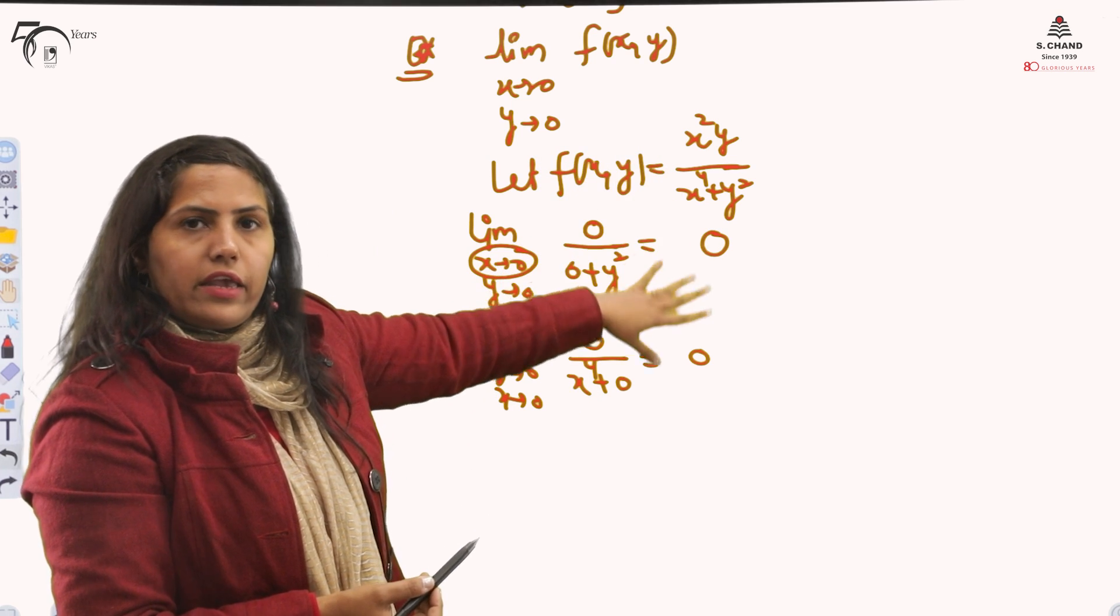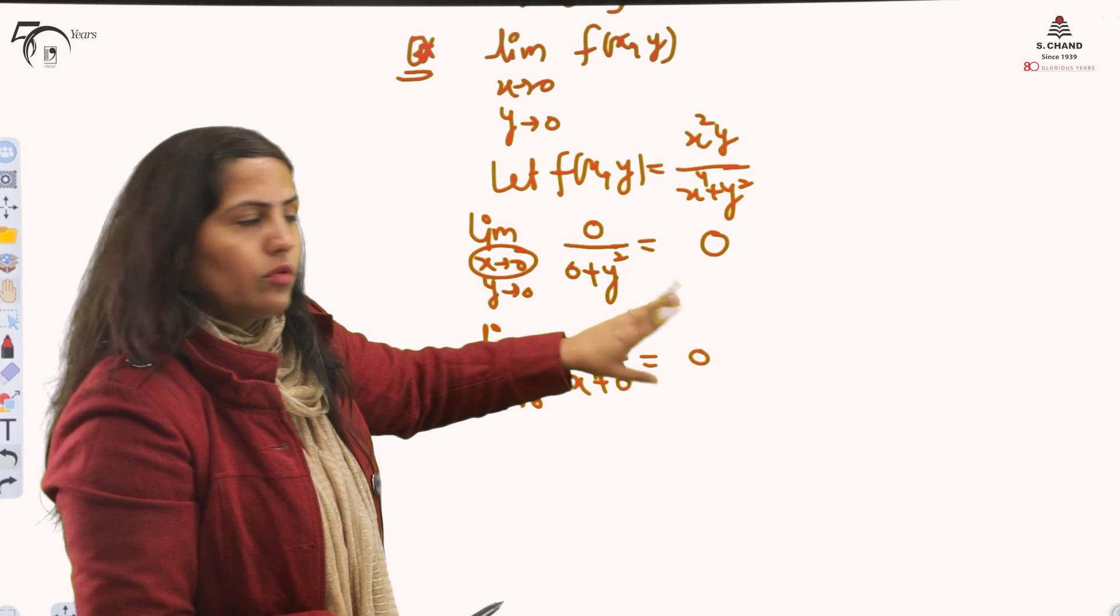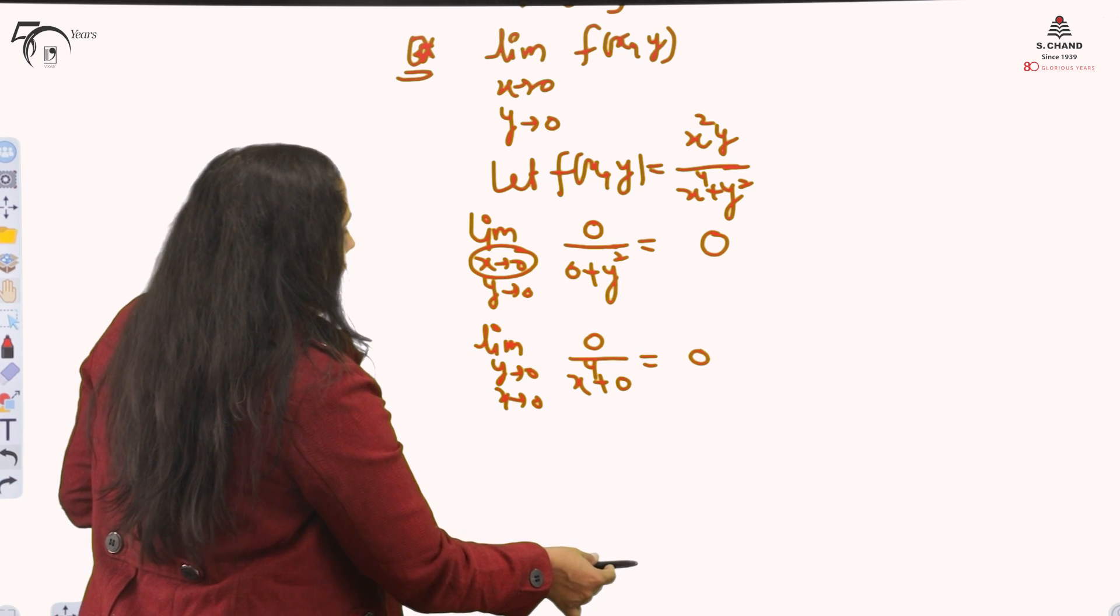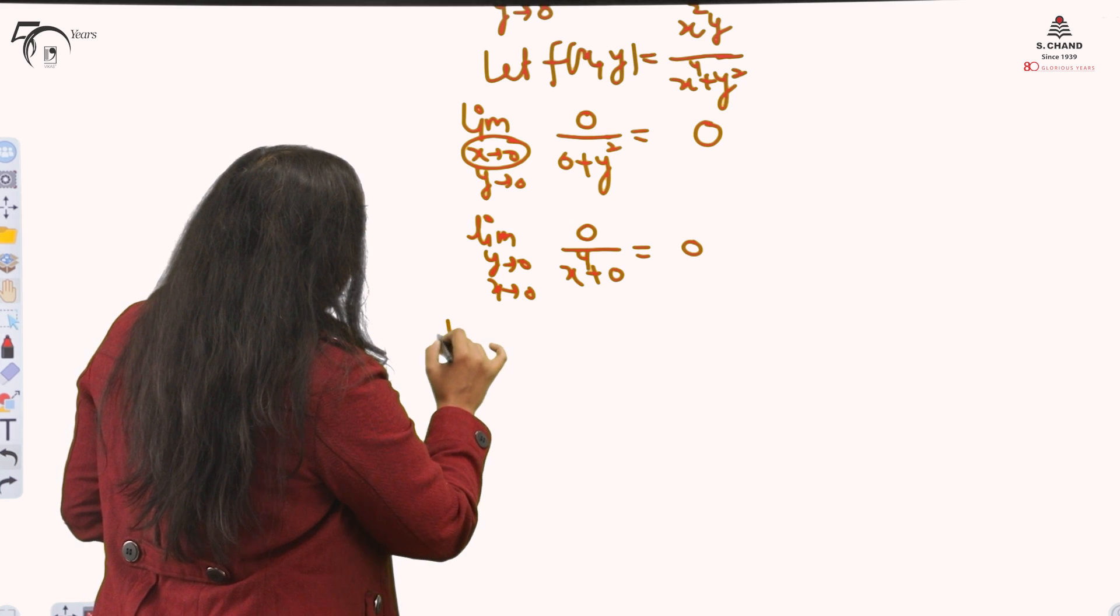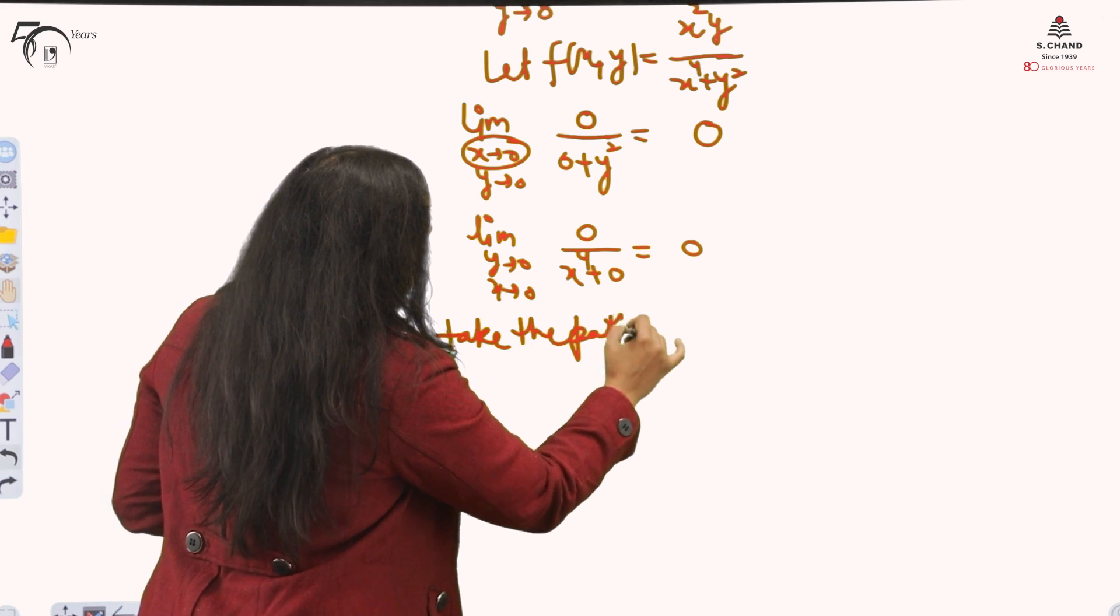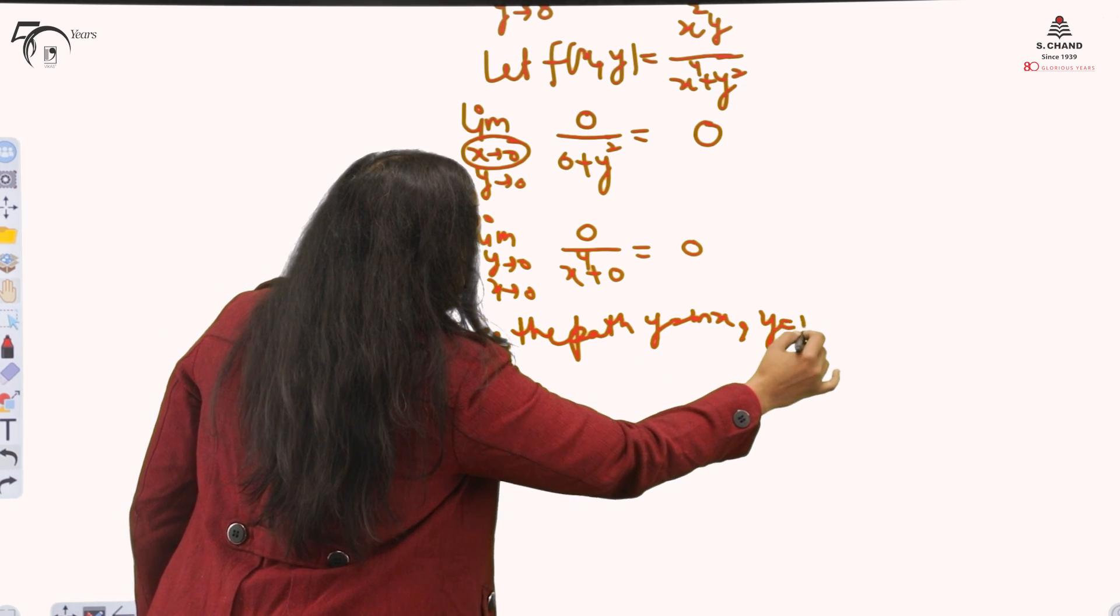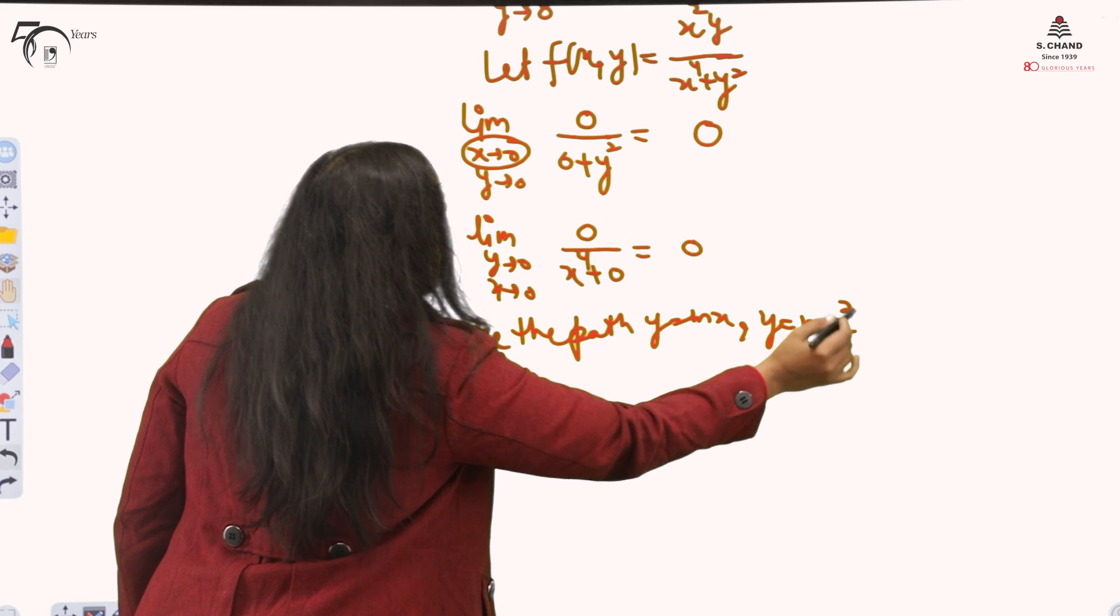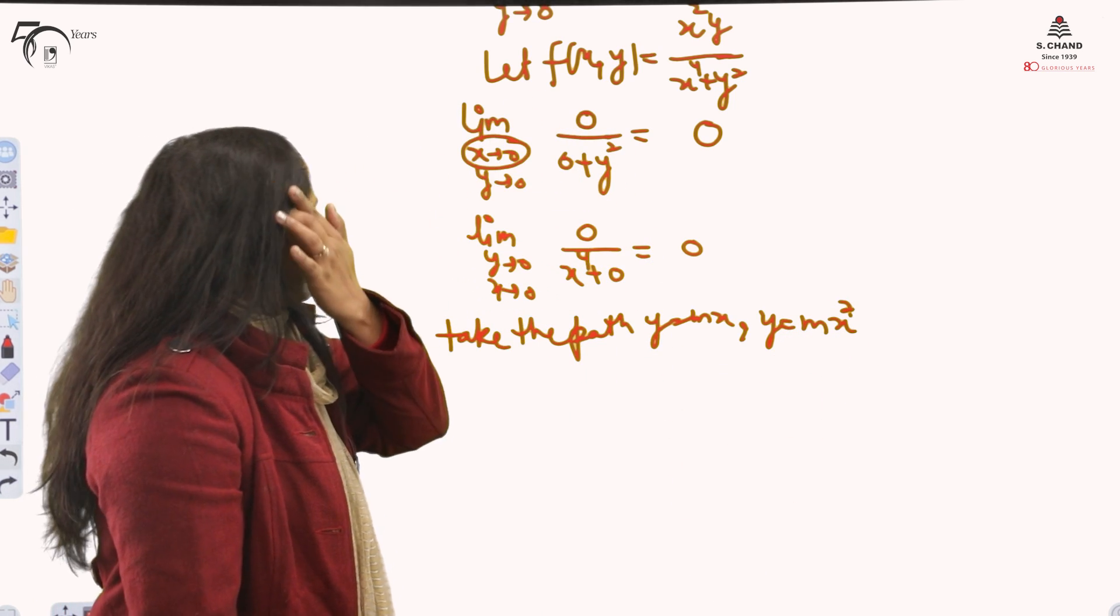When you will substitute first y=0, y=0 will give you 0 upon, again 0. These two are same. By just checking this, we cannot say at origin this thing, the limit is existing. Two more steps to check. And the steps are, you will take, choose, or take the path. y = mx. y = mx². If in such cases the limit exists, then you will say that at origin the limit is existing.